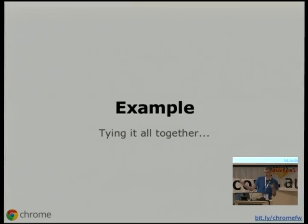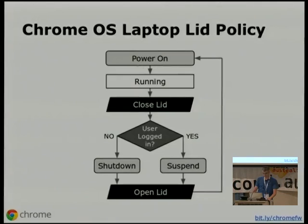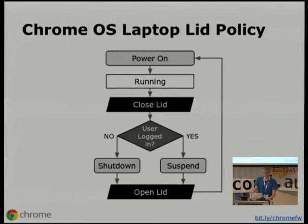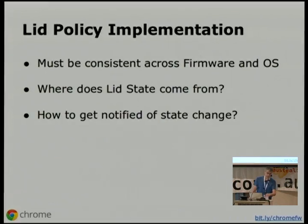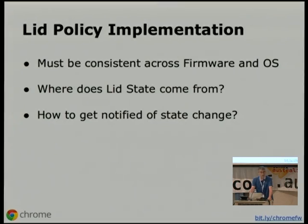I'm going to go into an example that tries to tie all these firmware components together and show why it's important that all of these different steps be open. The example is the laptop lid policy. When you shut your laptop lid, your system goes into suspend — but how does it actually make its way into that state? A very basic laptop lid policy for Chrome OS is: if the user has managed to log in, we go into suspend; otherwise we turn the system off. This doesn't take into account more advanced cases like having an external monitor plugged in — that can be handled at a higher level. But I do need to be sure that the behavior in firmware and the OS is consistent. For firmware, the user is never going to be logged in, so basically if you get a lid event in the firmware, you just turn the system off.